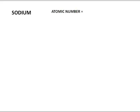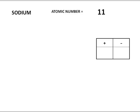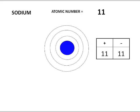Let's look at sodium. The atomic number is 11, which means our proton to electron count has to be 11. So let's draw a Bohr diagram. We start off with the symbol and need to fill in the electrons — 11 total. Two can fit in the first shell, eight in the second shell, giving us 10 electrons so far, which means it has one valence electron.